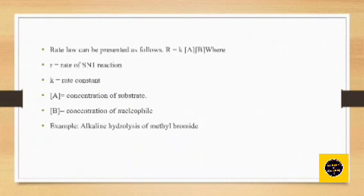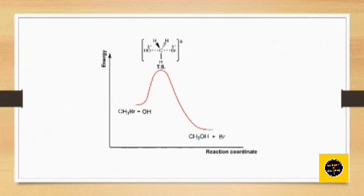The rate law for SN2 is R = k[A][B], where A is the concentration of the substrate and B is that of the nucleophile. A simple example is the alkaline hydrolysis of methyl bromide. On the reaction energy graph there is only a transition state whose energy is very high, making it highly unstable, and the system tends toward the product methanol — so the reaction is favorable.